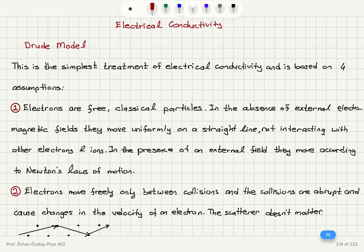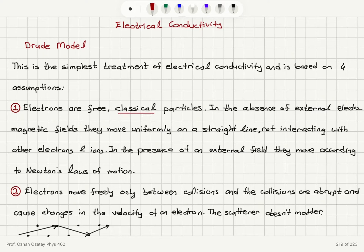In the presence of an external field, electrons move according to Newton's laws of motion, which is consistent with treating them as classical particles. In the Drude model, electrons are treated as classical particles, whereas in the Sommerfeld model they are quantum particles.